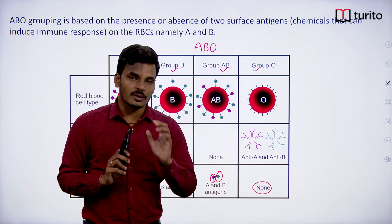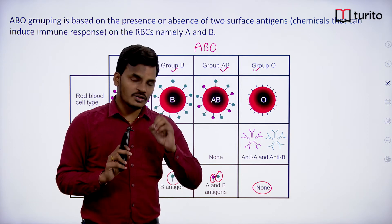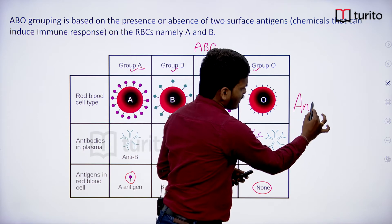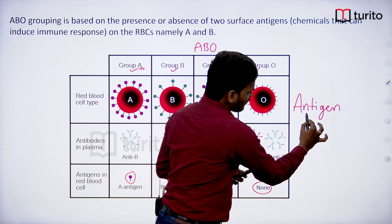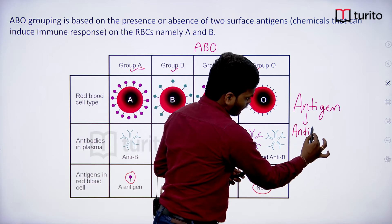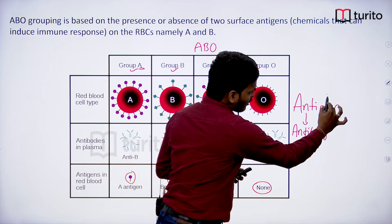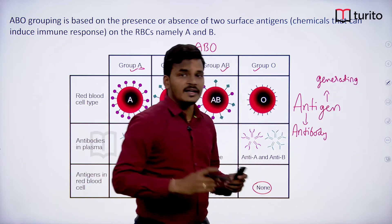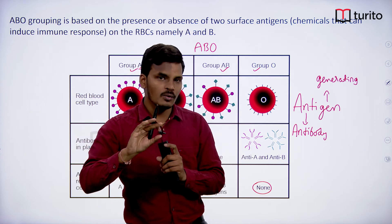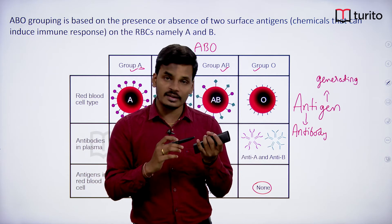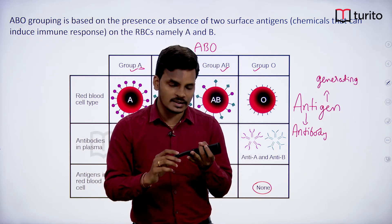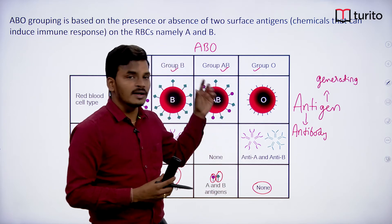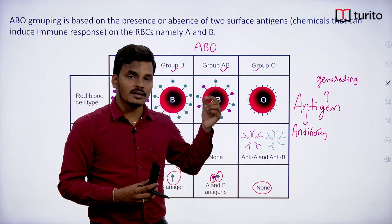Any substance which triggers the production of antibodies or triggers the immune response is known as an antigen. The word 'antigen' — 'anti' indicates antibody and 'gen' means generating — so antibody-generating molecules are known as antigens. The chemical nature of antigens can be proteins, carbohydrates, nucleic acids, or lipids — sometimes glycoproteins and glycolipids. The blood-group-determining antigens are glycoproteins.